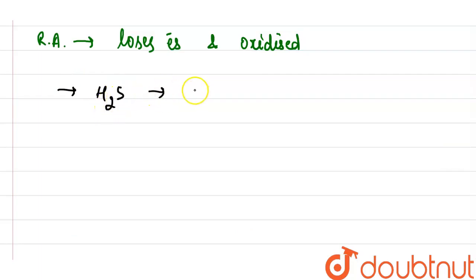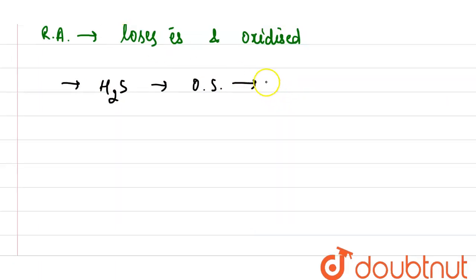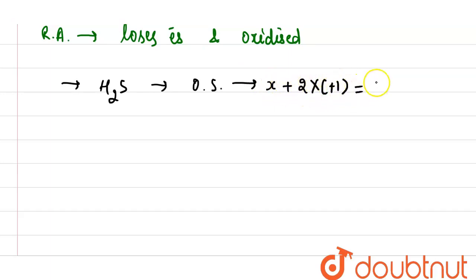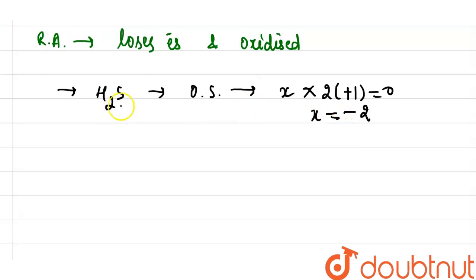In H2S, the oxidation state of sulfur is x. We have: x + 2(+1) = 0, so x = -2. Therefore, sulfur is in the -2 oxidation state in hydrogen sulfide.